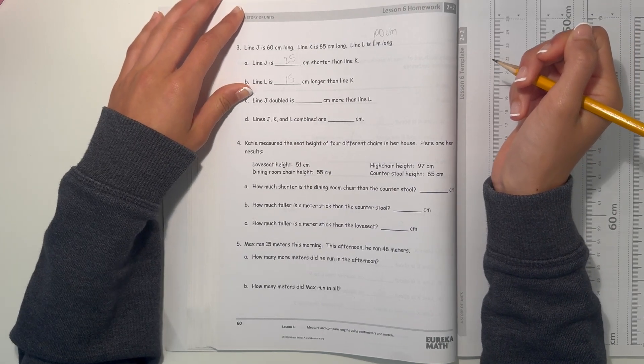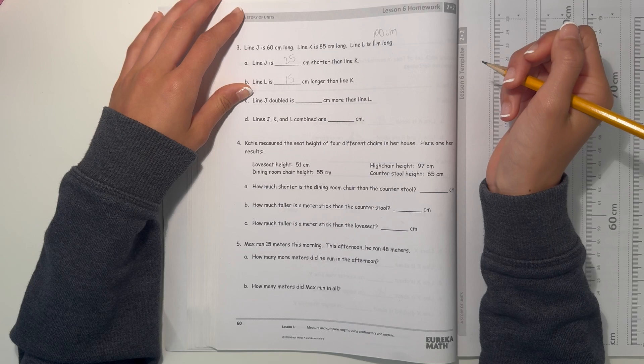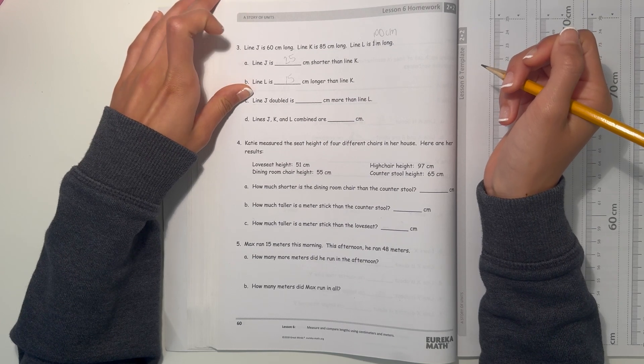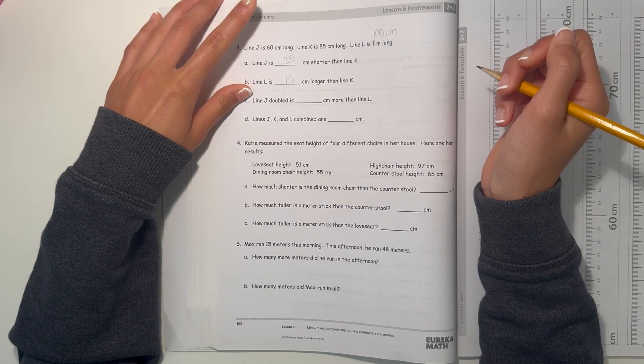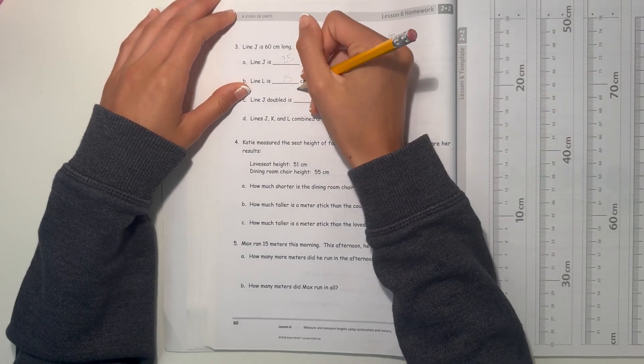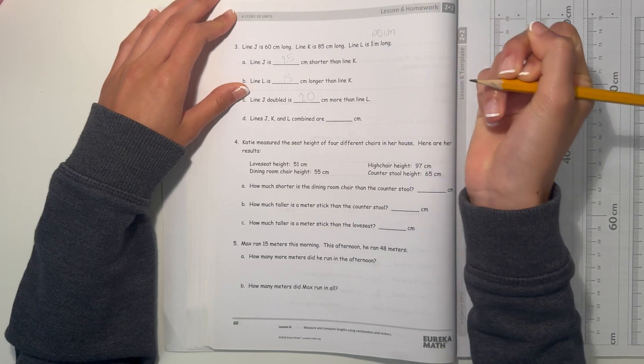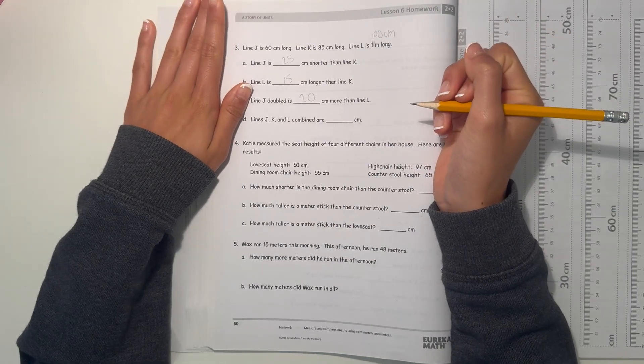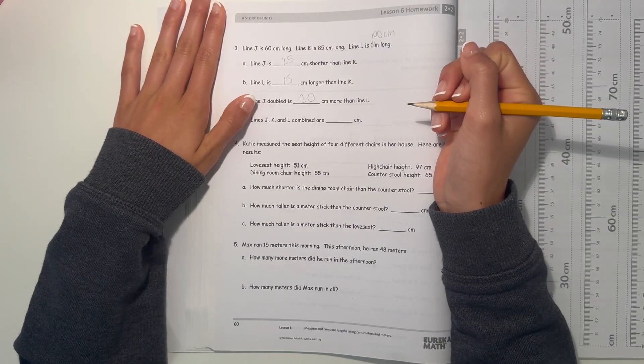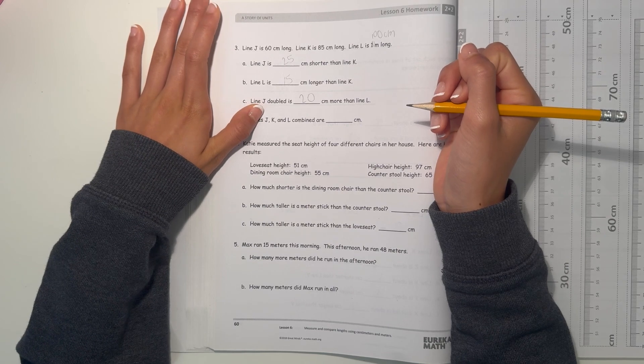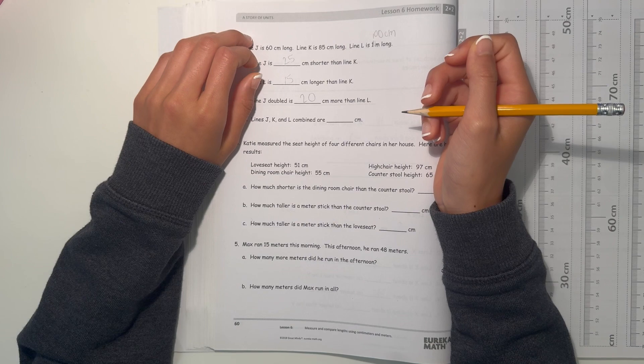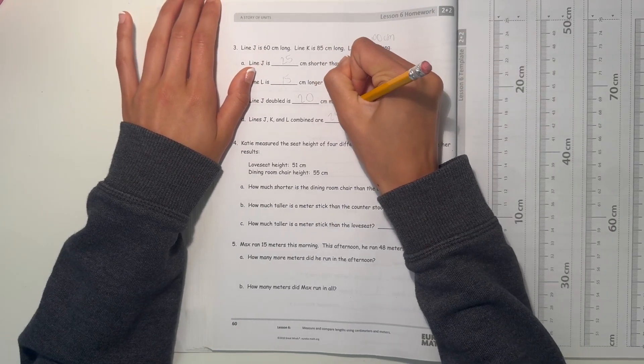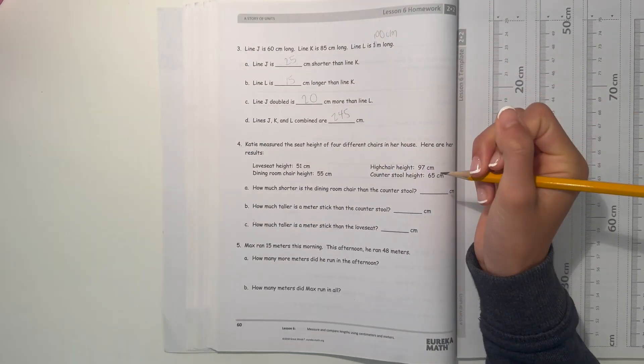And line J doubled is blank centimeters more than line L. So J, 60 plus 60 is 120. So 120 minus 100 is 20. So when line J gets doubled, it's 20 centimeters more than line L. So this is lines J, K, and L combined. 60 plus 85 is 145 plus 100 is 245. So combined, it's 245 centimeters.